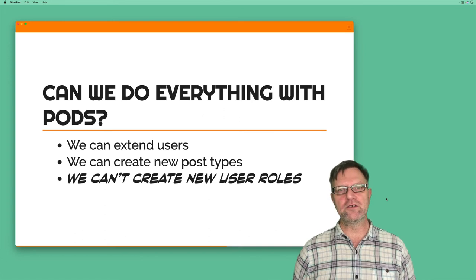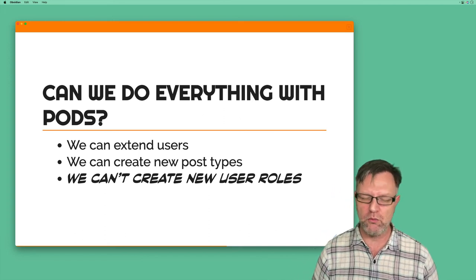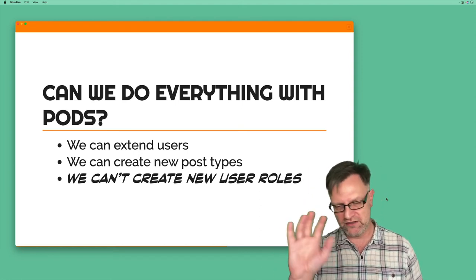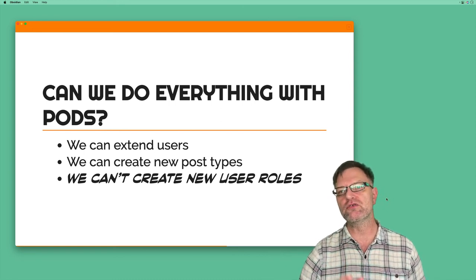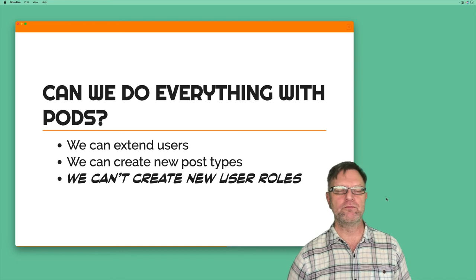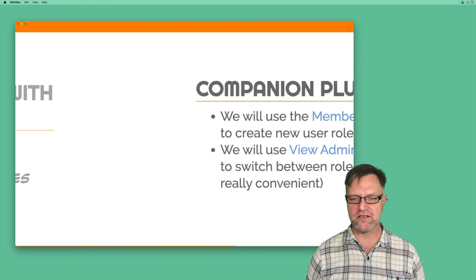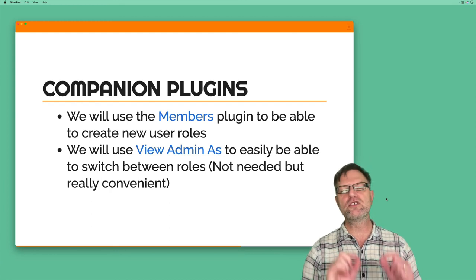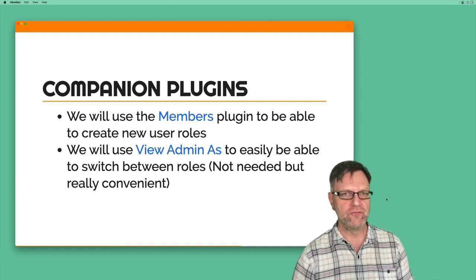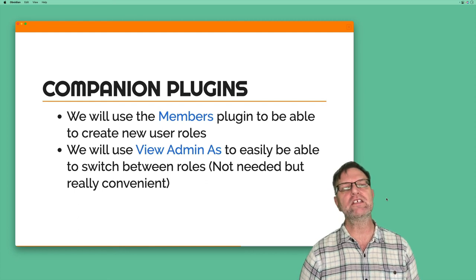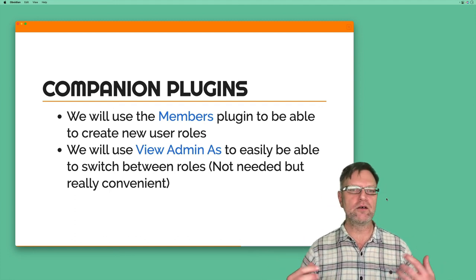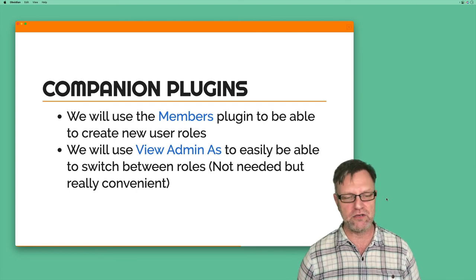The first thing to consider is whether we can do everything using Pods. With Pods we can extend users and create new post types, so those are not problems. But we can't actually create new user roles with Pods alone — Pods is prepared to use different user roles, but to create them we need something else. So in this series we will use two companion plugins: the Members plugin and the View Admin As plugin. The last one is not strictly needed but is very convenient, and other member plugins would probably work equally well.